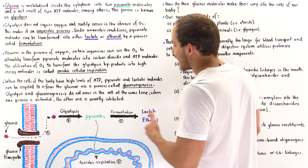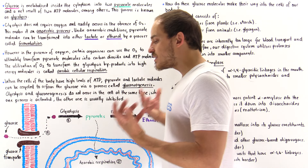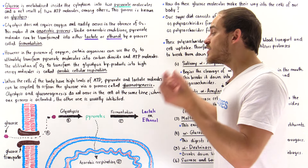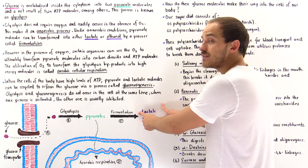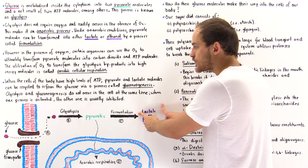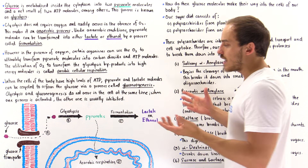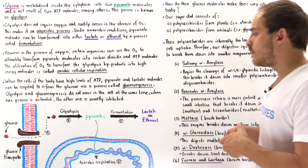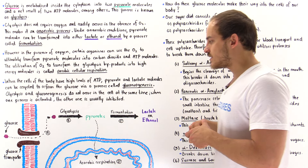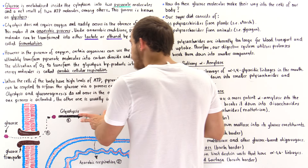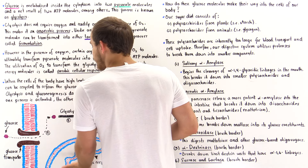The conjugate base of lactic acid is lactate. So inside our body, when cells don't have enough oxygen, they take the pyruvates and transform them into lactic acid molecules. What happens if there is oxygen present in the cells of our body? Under aerobic conditions, when we have oxygen present, the pyruvate molecules will move into the mitochondria of the cell.